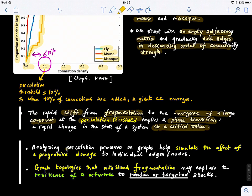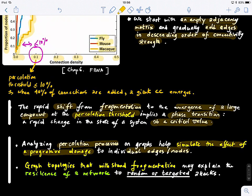So analyzing percolation processes on graphs help simulate the effect of a progressive damage to individual edges or nodes in the graph. And also graph topologies that withstand the fragmentation may explain the resilience of a network or graph to random or targeted attacks.